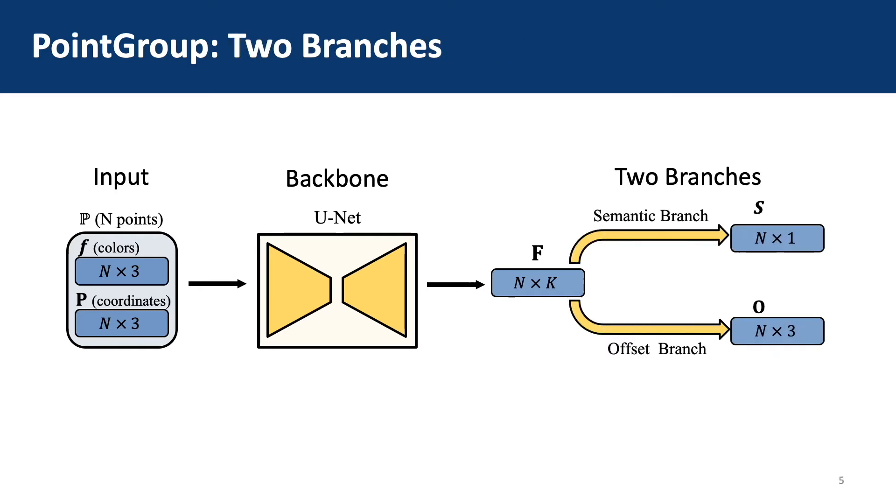The discriminative pointwise features are then fed into two branches: a semantic branch for predicting a semantic label for each point, and an offset branch for predicting a per-point offset vector to shift each point towards the centroid of its respective instance.